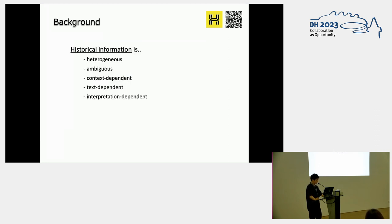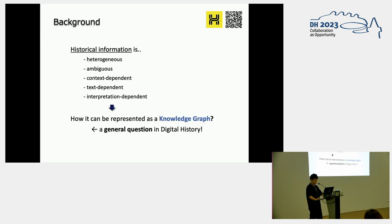However, we have to say that the actual description of this kind of information is often quite heterogeneous, ambiguous, highly context-dependent, text-dependent, and even interpretation-dependent. Regarding this, our question is how we present such complicated information as a knowledge graph, which enables us to deal with complex information quite flexibly. It is not only us who are interested in this problem, but we might say that this is a kind of general question in digital history.